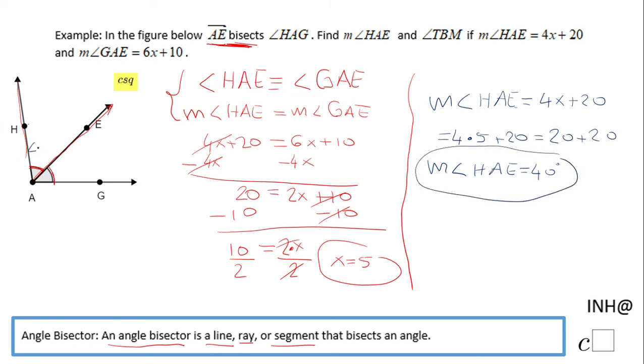You can do the same substitution for angle GAE of 5, and you're going to see you get 40. You should get 40 because these two angles are congruent.